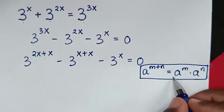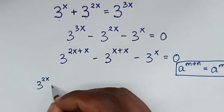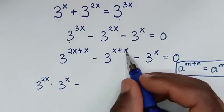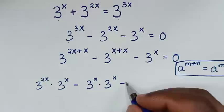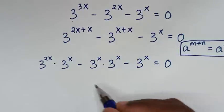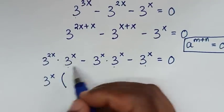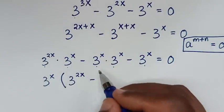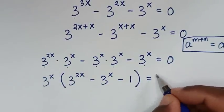Applying the multiplication of exponents rule, it will be 3 power of 2x times 3 power of x, minus 3 power of x times 3 power of x, minus 3 power of x is equal to 0. Then 3 power of x is common, so we factor it out of the bracket: 3 power of x times (3 power of 2x minus 3 power of x minus 1) equals 0.